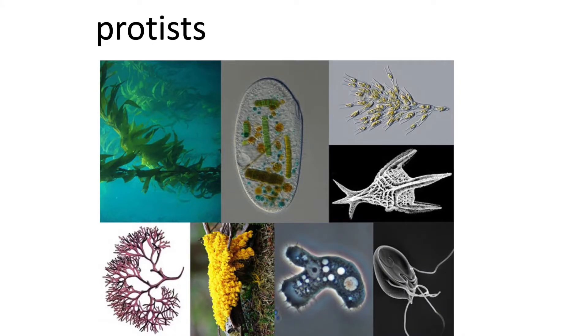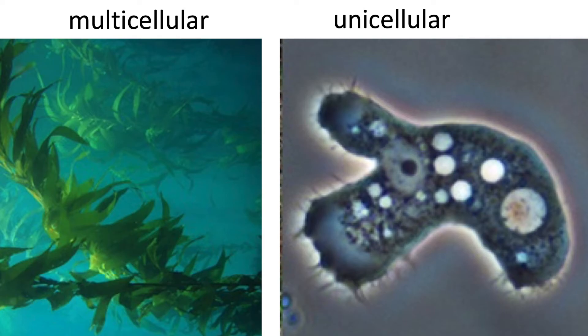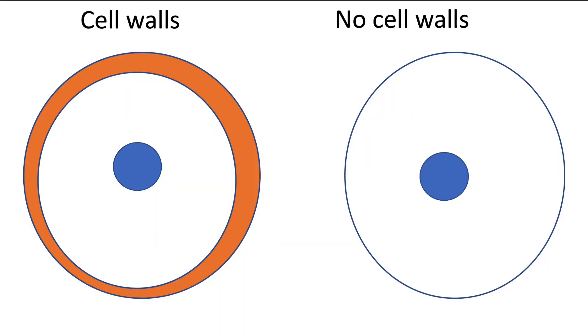The last kingdom is the protists. Protists are varied — they can be multicellular or unicellular organisms. The plant-like structure on the left is actually a protist. The unicellular organism on the right is not a bacteria — it is also a protist.